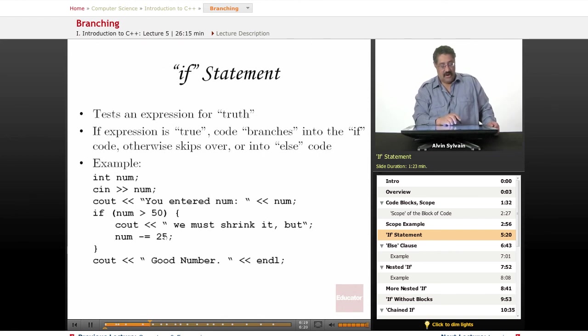52 is too large, so we shrink it. We just subtract 25 from the number. And then we print out it's a good number. If you put in 49, 49 greater than 50, well that's false. So we'll skip over this code block. This code will not be executed.